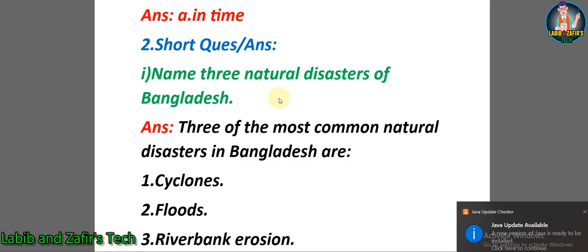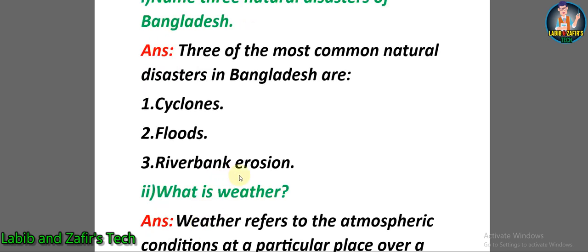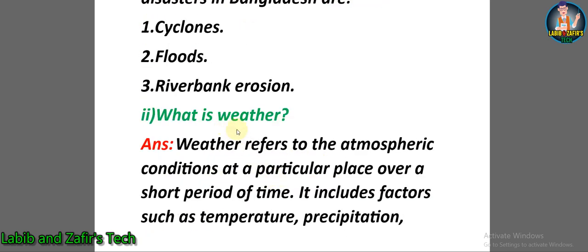Short question number one: Name three natural disasters of Bangladesh. Answer: Three of the most common natural disasters in Bangladesh are number one — cyclones, number two — floods, number three — river bank erosion.